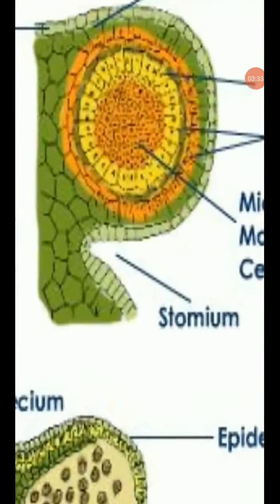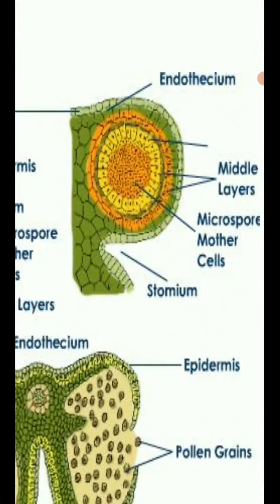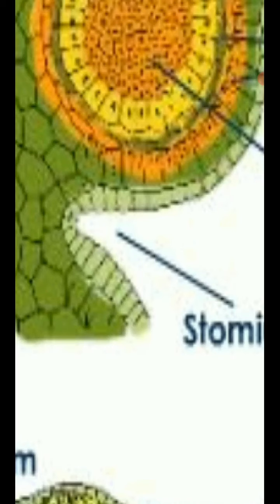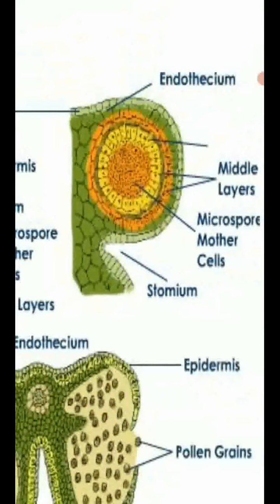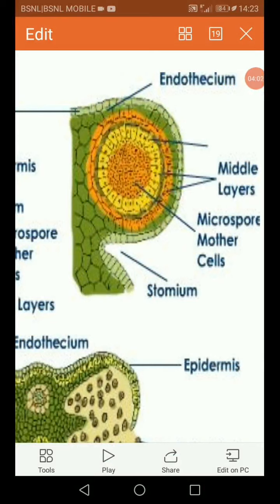Along the junction of two microsporangia, the thickening is absent. These cells are called the stomium. This region is also hydroscopic in nature and absorbs water; during maturity it dehisces and releases the pollen grains. The middle layer consists of two to three layers next to the endothecium, and these cells are present for only one or two days — so they are called ephemerals — and after that they are disintegrated or crushed by maturity.